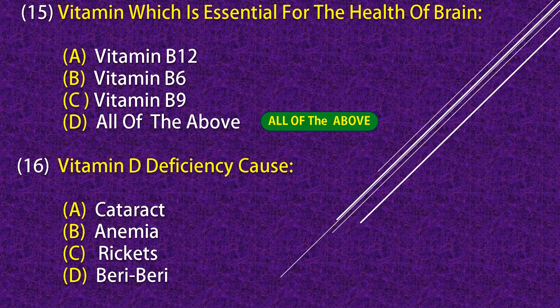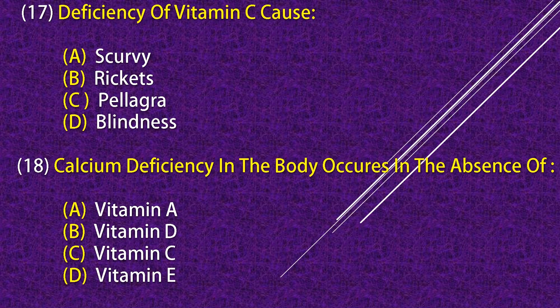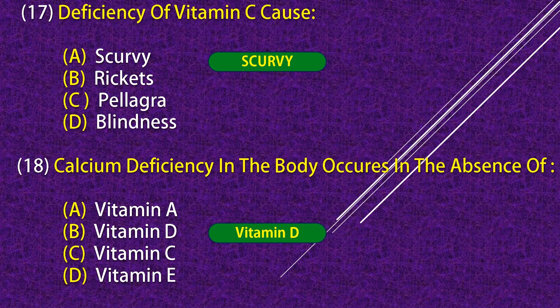All of the above. What does Vitamin D deficiency cause? Vitamin D deficiency causes rickets. Deficiency of Vitamin C causes Scurvy. Calcium deficiency in the body occurs in the absence of Vitamin D.